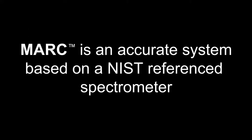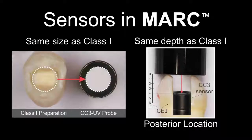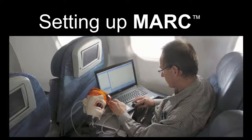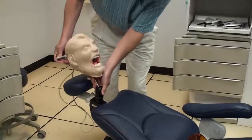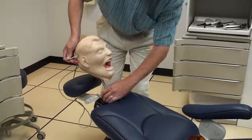Mark is an accurate system based on a National Institute of Standards Technology referenced spectrometer. Here we can see the sensors in Mark. The sensors are roughly the same size as a Class I preparation in a bicuspid tooth. The Mark head is easy to set up and the software is very user friendly. In fact, Mark can be used almost anywhere. Here we can see Mark being attached to a dental chair.